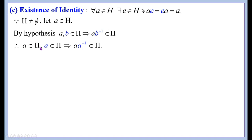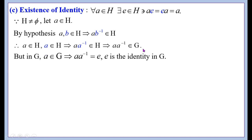Therefore, a ∈ H and a ∈ H implies a·a⁻¹ ∈ H by hypothesis. This implies a·a⁻¹ belongs to G, because H is a non-empty complex of G, meaning H is a subset of G. Whatever elements are in H must also be in G. But in G, a·a⁻¹ = e, where e is the identity element of G.